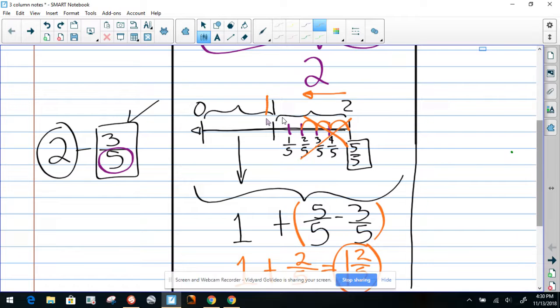So now we subtracted all this part, 3/5. And what do we have left? Well, we have one whole and 1/5. Two-fifths. No, 2/5, sorry about that. So that's 2/5. That's the answer.